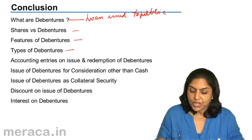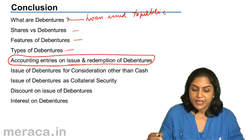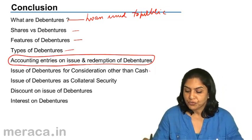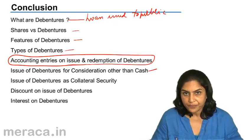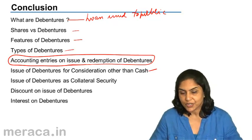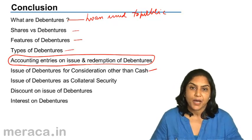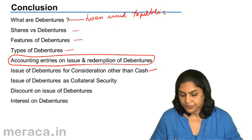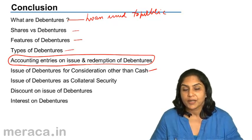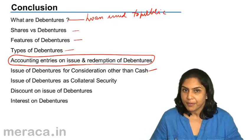These entries were for issue of debentures for cash. However, debentures may also be issued for consideration other than cash, such as for the purchase of a business or assets. In such cases, debentures may still be issued at par, premium, or discount. To find the number of debentures, we divide the purchase consideration by the issue price of a debenture.